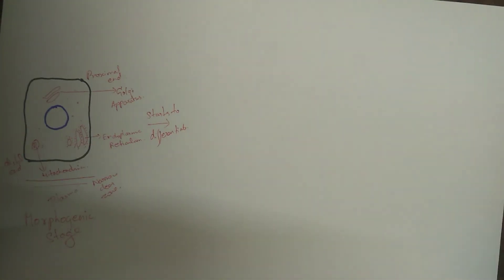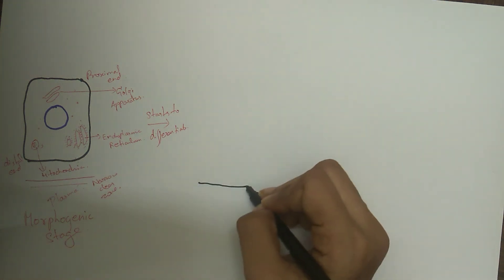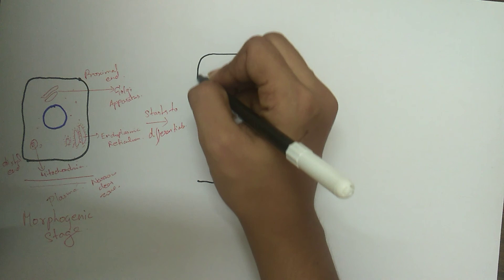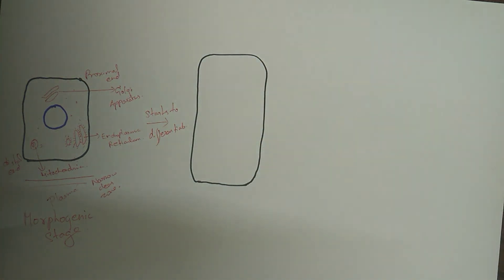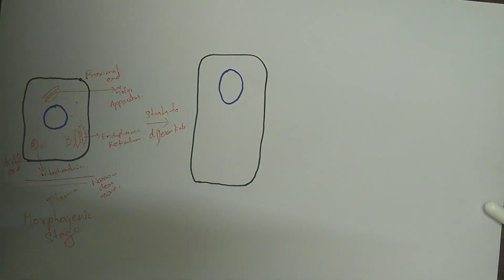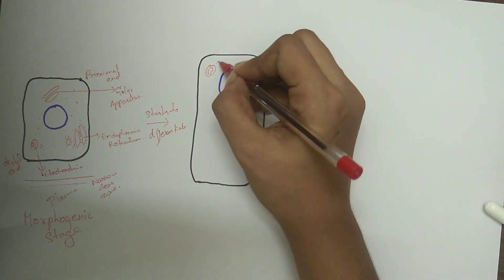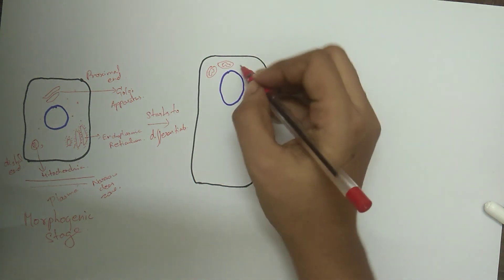This is followed by the organizing stage, where the cells of the inner enamel epithelium interact with the adjacent superficial cells of the dental papilla which differentiates into odontoblast. In this stage, the inner enamel epithelial cells elongate on the distal side and their nuclei shift proximally, and the Golgi complex and centrioles migrate to the distal end.